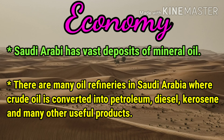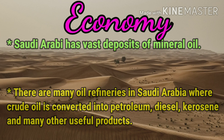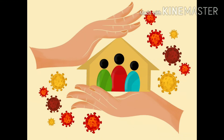Refineries are factories where substances in their natural state, such as oil or sugar, are made pure. Crude oil means raw oil, which is converted into petroleum, diesel, kerosene and many other useful products, many of which are exported to other countries. Many factories have also been developed to produce consumer goods. We'll continue with part two of this chapter in our next video, covering the life of the people of Saudi Arabia and some major cities. Take care, stay home, stay safe!